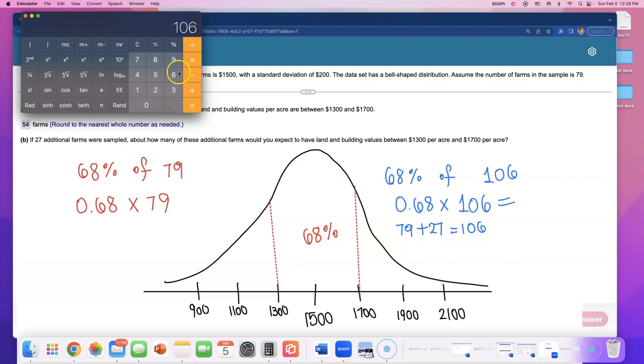0.68 times 106 equals, so that's about 72 farms.